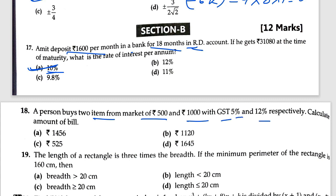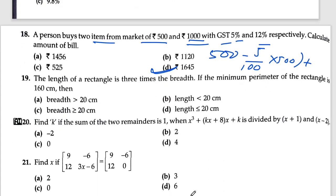For question 19, apply the formula: 500 minus (5 over 100) into 500, plus 1,000 minus (12 over 100) into 12,000. Solving in the same way, the total answer is 1,645.